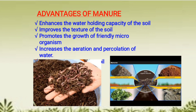On the other hand, manure does not have any disadvantages — it has all advantages. What are the advantages of manure? It enhances the water holding capacity of the soil as the soil becomes porous. It improves the texture of the soil. It promotes the growth of friendly microorganisms. It also increases the aeration and percolation of water because the soil becomes porous in nature, allowing more air and more water to be accommodated.